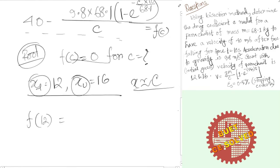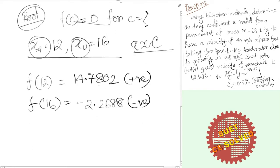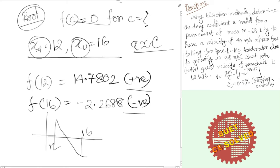Evaluating the function: f(12) equals 14.7802, which is a positive value. And f(16) equals minus 2.2688, which is a negative value. Since the sign has changed between xl=12 and xu=16, our function has a root in this interval — this confirms graphically that the root lies between these two values.